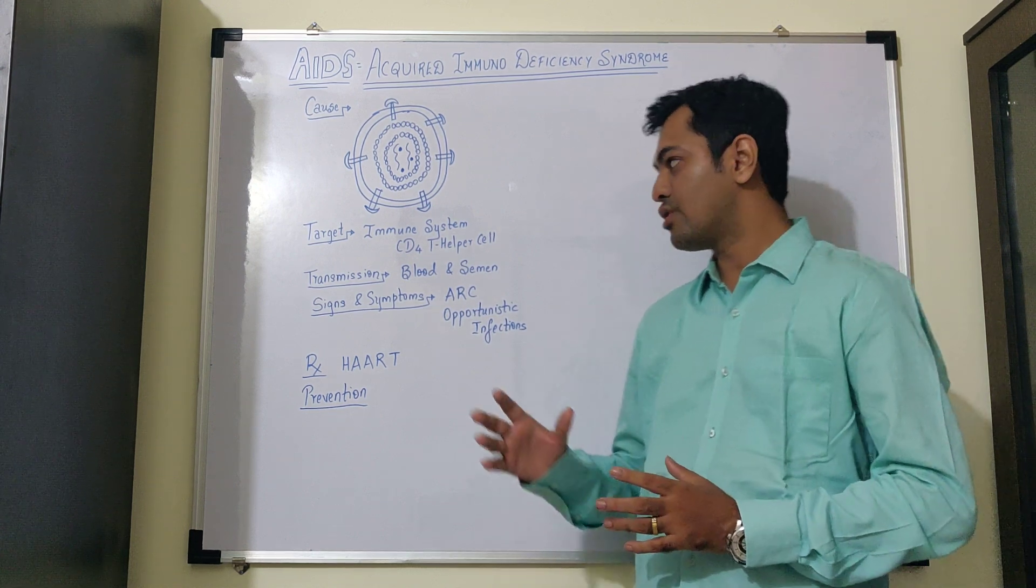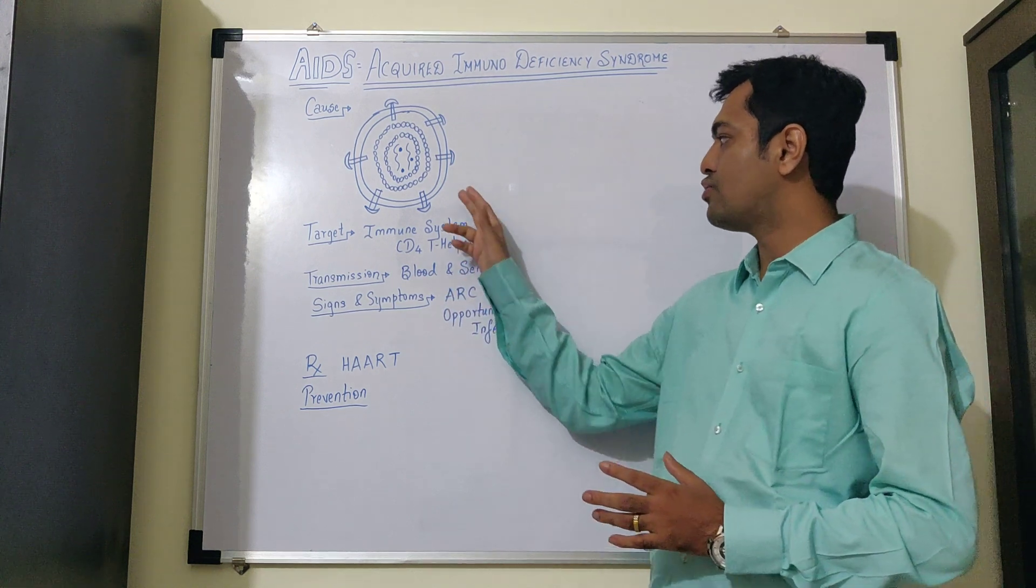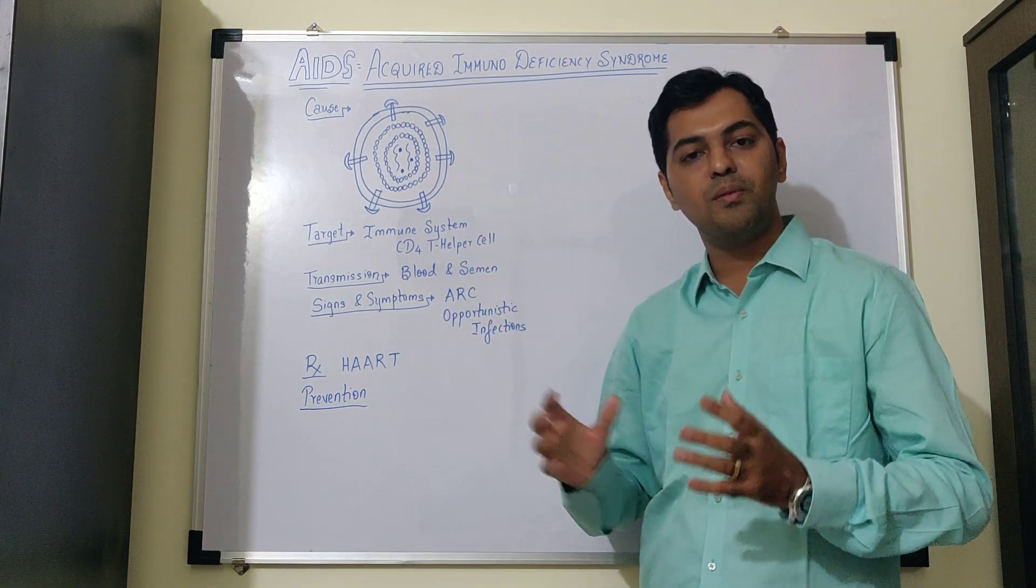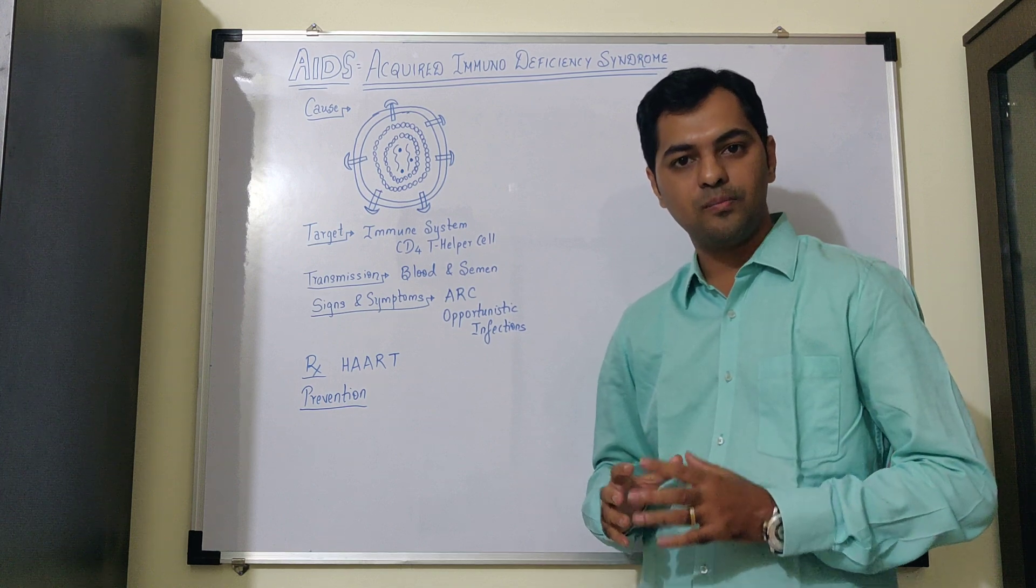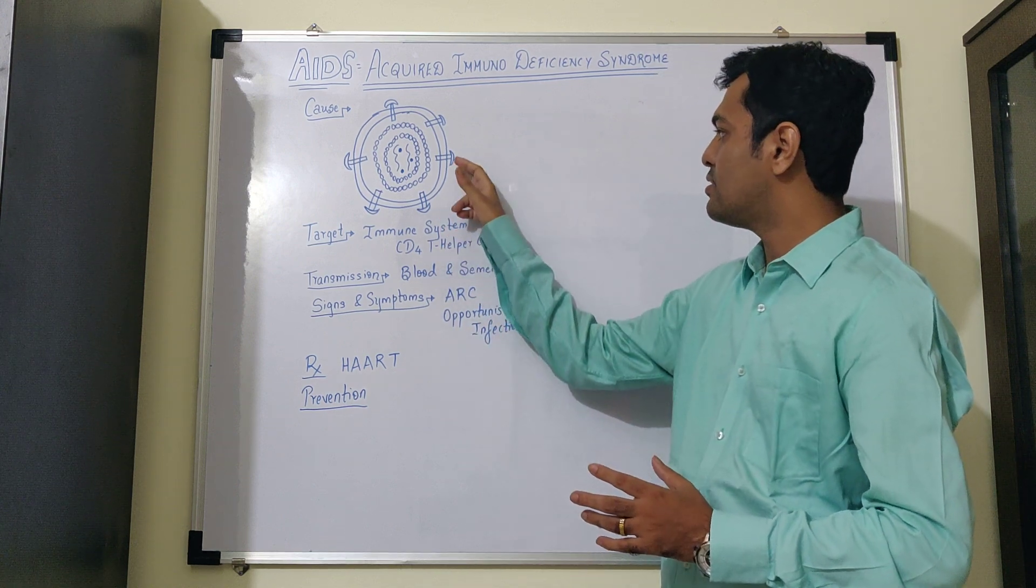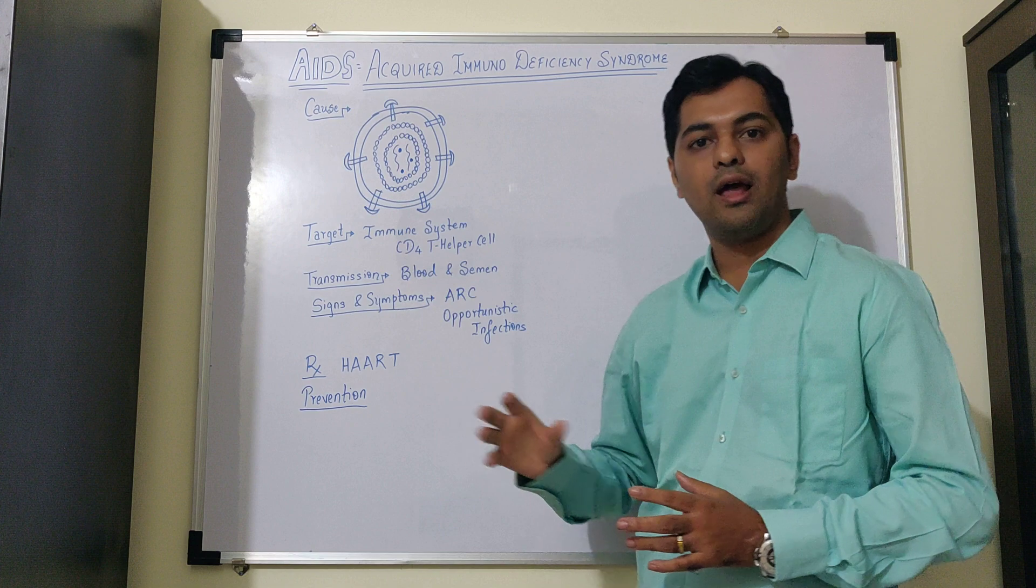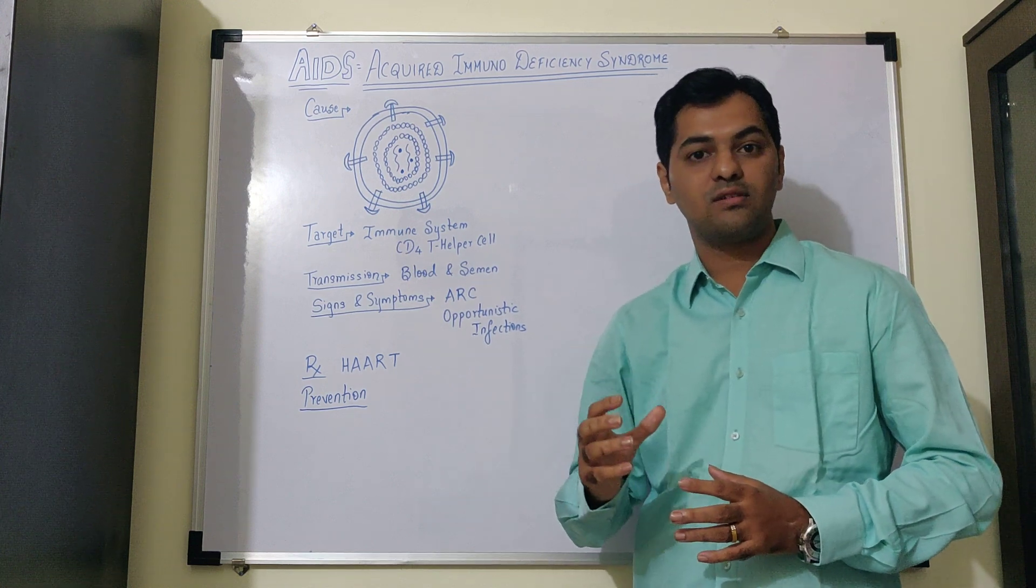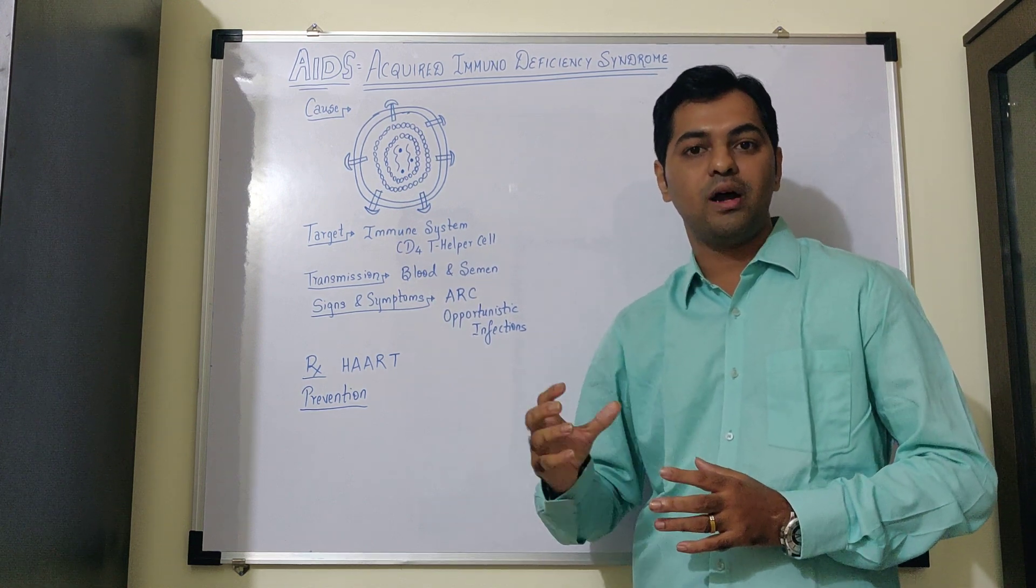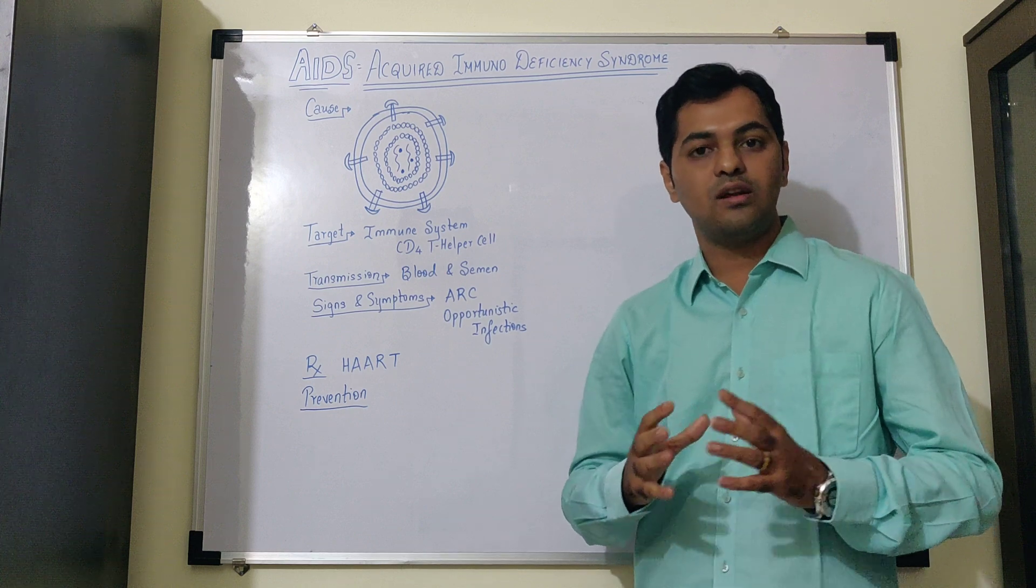As you can observe, the structure of HIV mainly consists of two lipid layers. So there is a membrane which is made up of lipids. And with that, there are certain spikes of glycoproteins, which also act as the receptor which binds with the target cells, that is the immune cells.